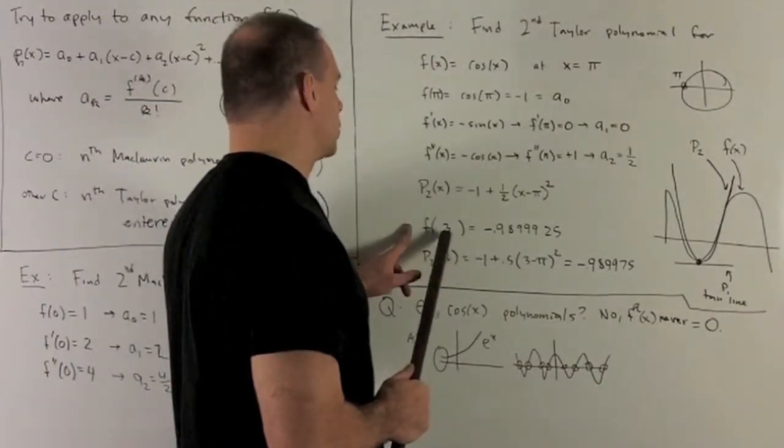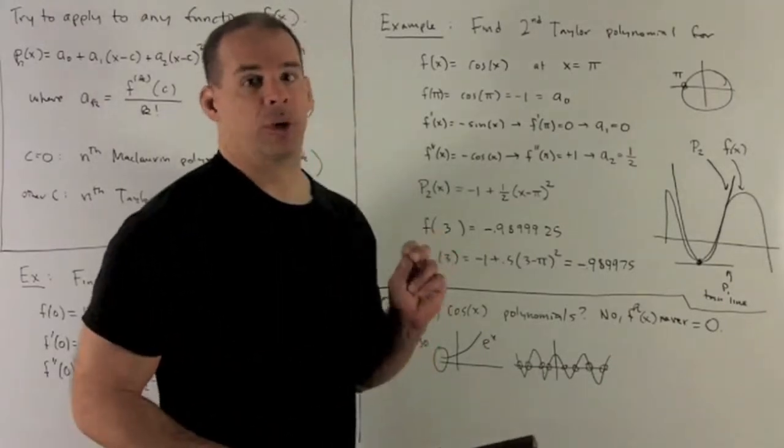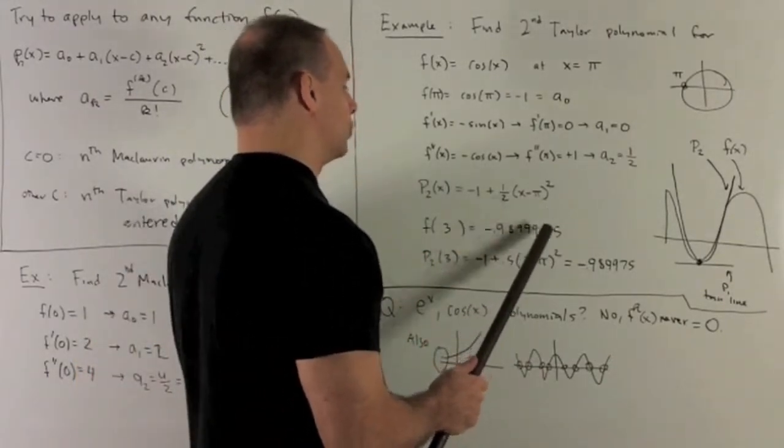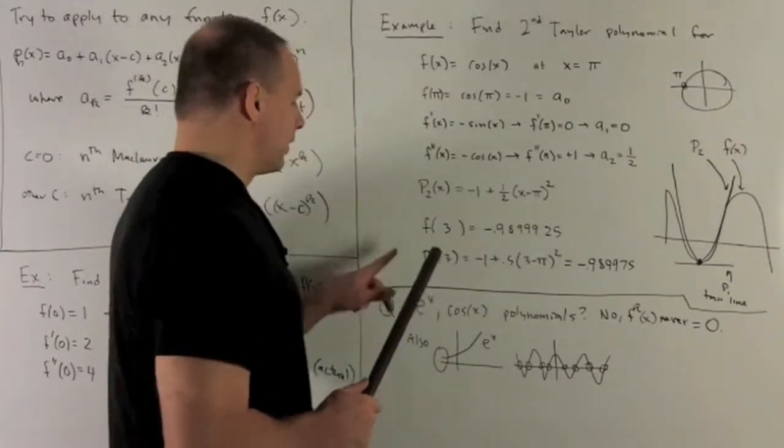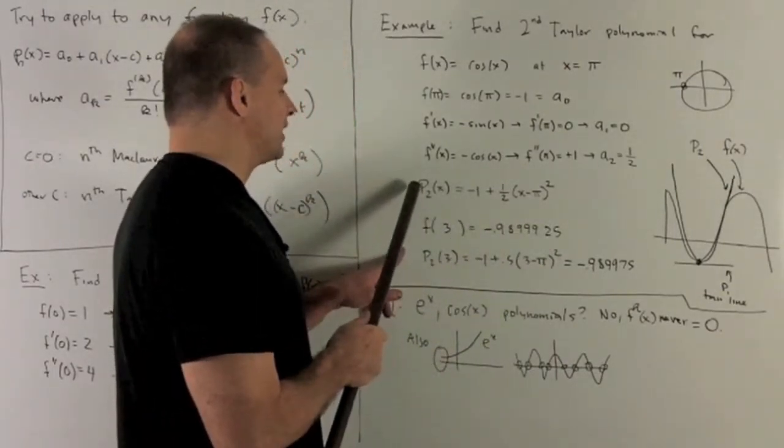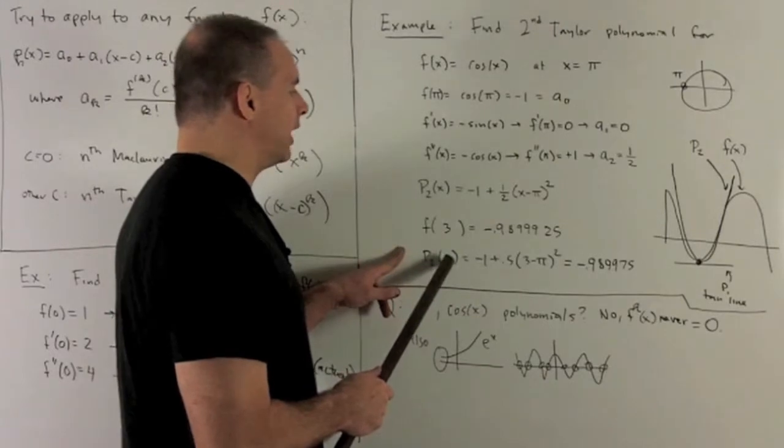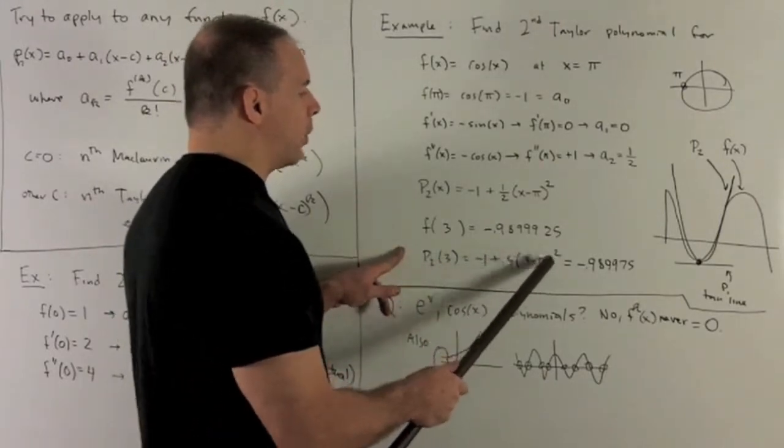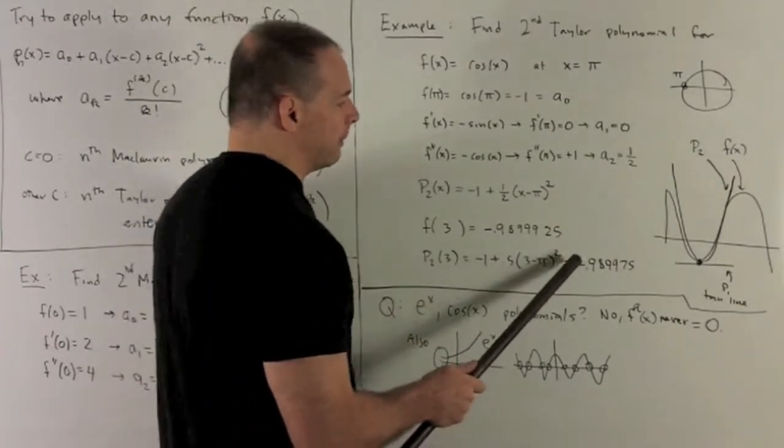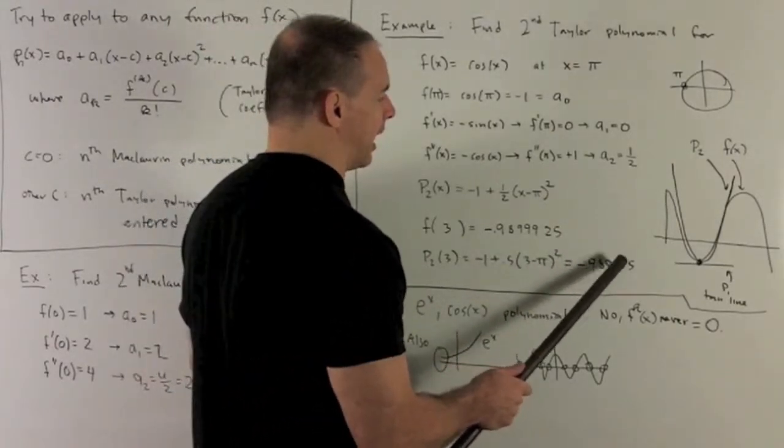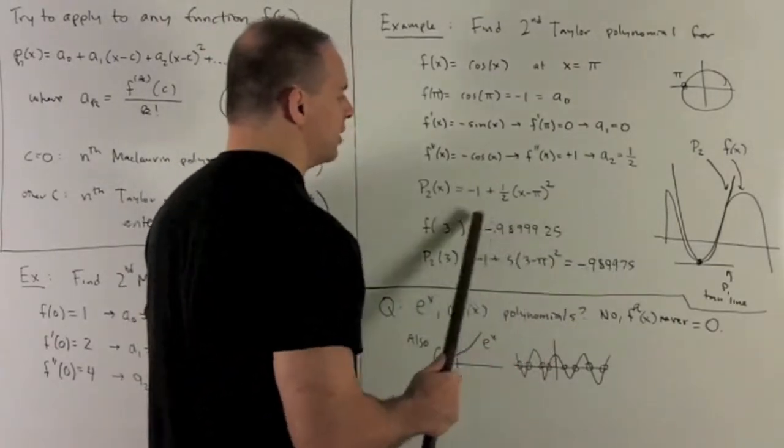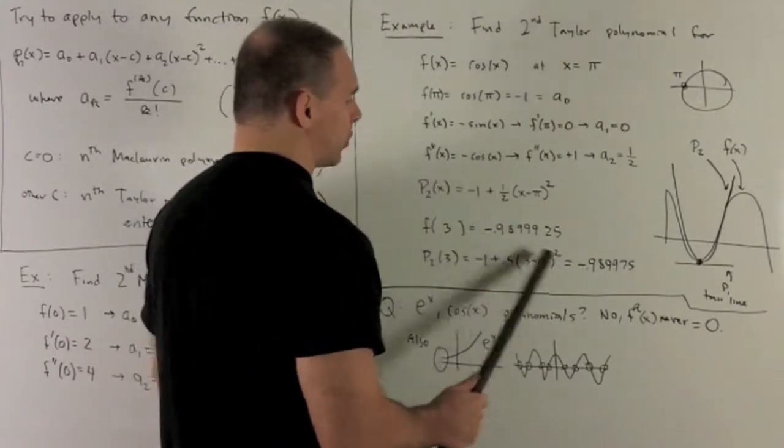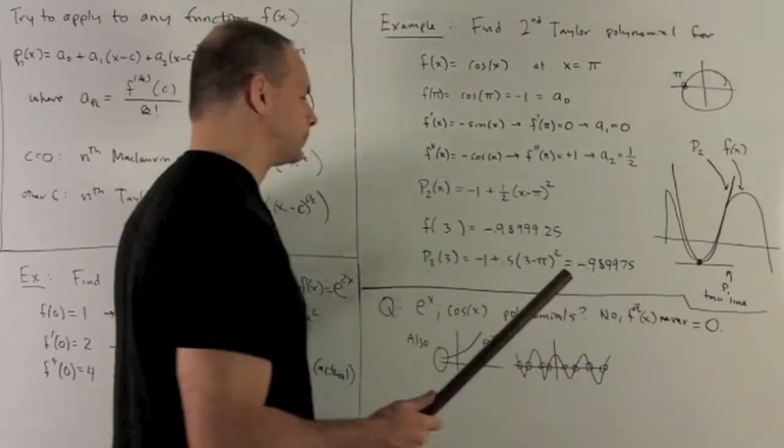If I put that in my calculator, cosine of 3, make sure you do it in radians, it's going to be minus 0.98999925. If I put this into our second Taylor polynomial, put our 3 in, that's going to give me minus 1 plus 1 half (3 minus π) quantity squared. And that comes out to be minus 0.989975. So you see, just getting the second Taylor polynomial gets us very close to our actual answer.